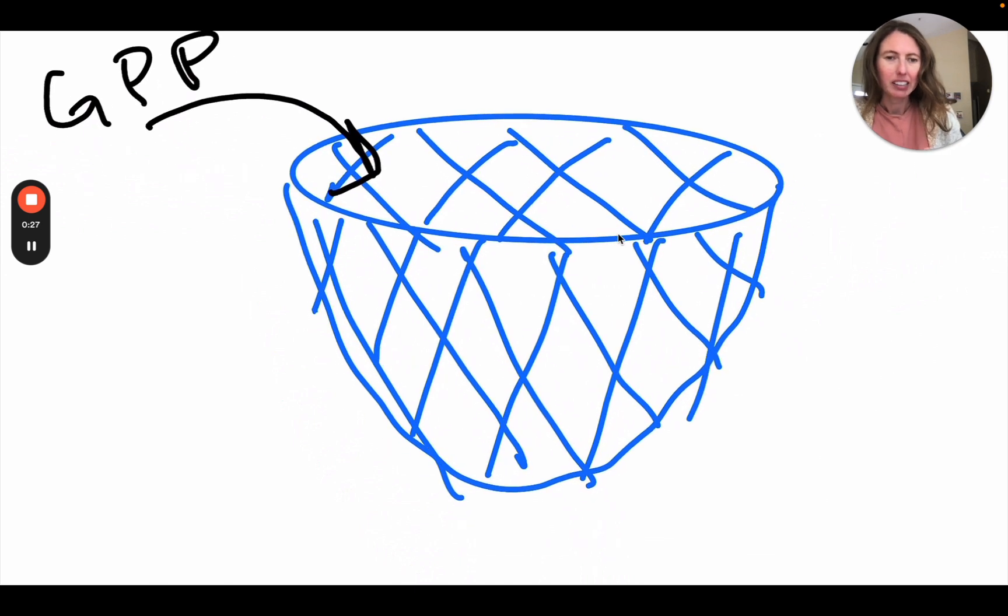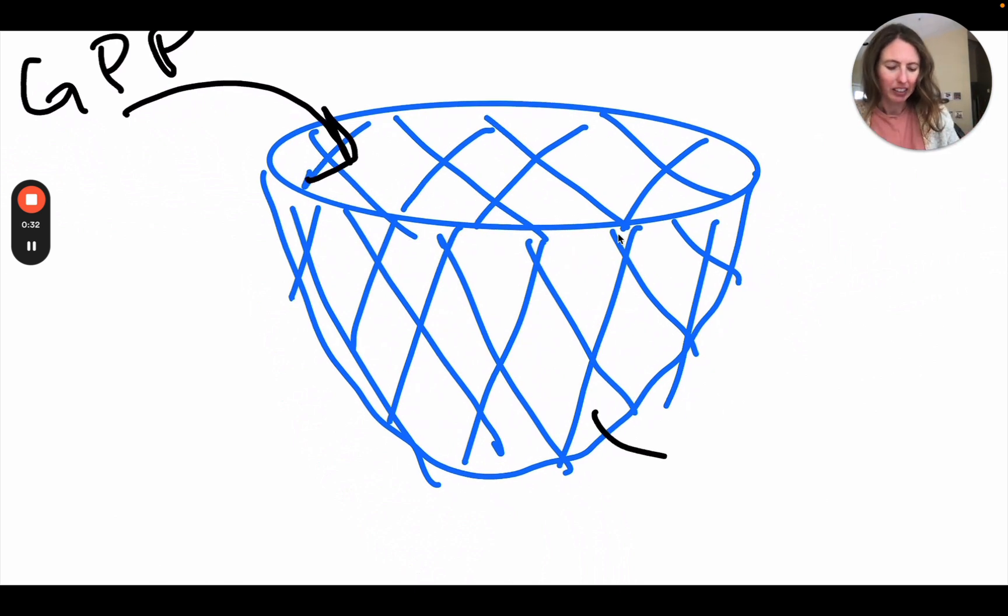But those plants, they have to use some of that energy for their own cells. And that's going to leave this net. And that's RL, respiration loss.